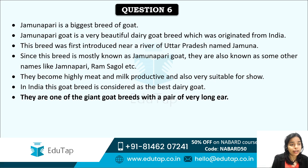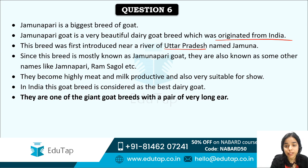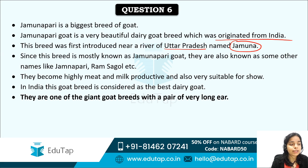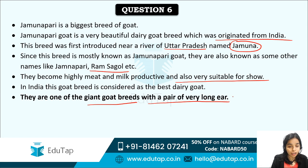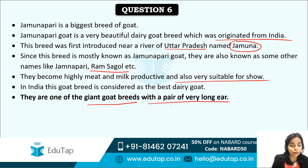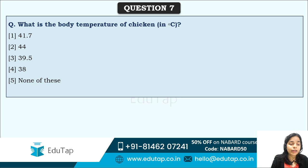Jamunapari is the biggest breed of goat — a beautiful dairy goat breed originated from India, first introduced near the Jamuna or Yamuna river in Uttar Pradesh, hence the name Jamunapari. They are also known as Ram Sagol, are highly meat and milk productive, and are one of the giant goat breeds with a pair of very long ears — remember this unique characteristic.